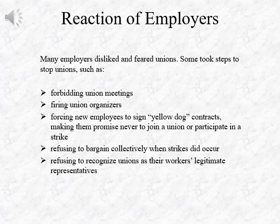Most employers and factory owners disliked and feared unions and took steps to stop them. Those steps included forbidding union meetings, firing union organizers, and forcing new employees to sign yellow dog contracts — contracts that made them promise never to join a union or even participate in a strike. Other employers refused to bargain collectively when strikes did occur, not wanting to appear weak. And lastly, they would refuse to recognize unions as the workers' legitimate representatives, taking away any power the union had in bargaining for fair conditions and better wages.